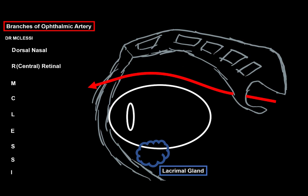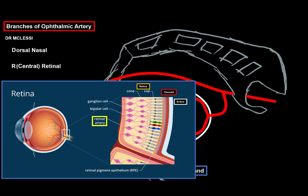Next is the R, R for central retinal artery. It pierces the eyeball together with the optic nerve and then branches off supplying the retina. So do you remember the layers of the eye? There's first the sclera, then there's the choroid, and then there's the retina. So as you see here, the artery branches out specifically to the retina.